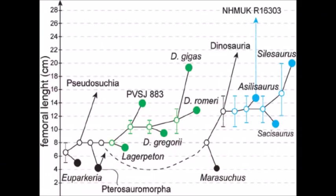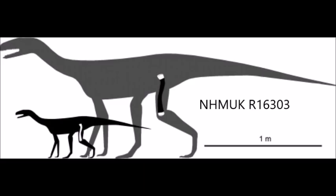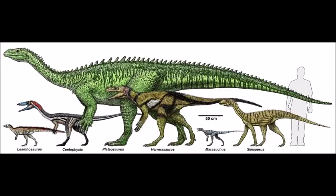Some silesaurids reached fairly large sizes — larger than the earliest dinosaurs — as indicated by specimen NHMUK R16303, which may be a species of Asilisaurus. One common feature of so many of these basal dinosauromorphs is their bipedality, suggesting upright posture and freed forelimbs might have had some selective advantage over being on all fours. And when we do find the first dinosaurs, who appeared approximately 235 million years ago in the Middle Triassic, they are all small bipedal creatures.